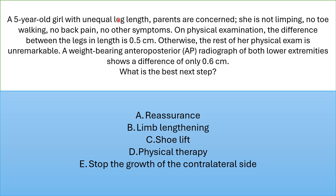A 5-year-old girl with unequal leg length. Parents are concerned. She's not limping, no toe walking, no back pain, no other symptoms. In physical examination, the difference between the legs in length is 0.5 cm. The rest of her physical examination is unremarkable. A weight-bearing AP radiograph of both lower extremities shows a difference of only 0.6 cm. What is the best next step?